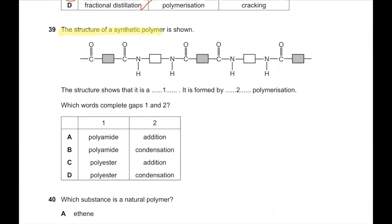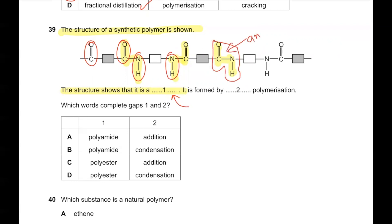Question number 39. The structure of a synthetic polymer is shown containing CO and NH linkages. When a dicarboxylic acid bonds with a diamine, we get a polyamide. Since the structure has amide linkages (CO–NH), this is a polyamide, not a polyester. It is formed by a condensation reaction, because when the CO and NH bond forms, a water molecule is released. So B is the correct answer.